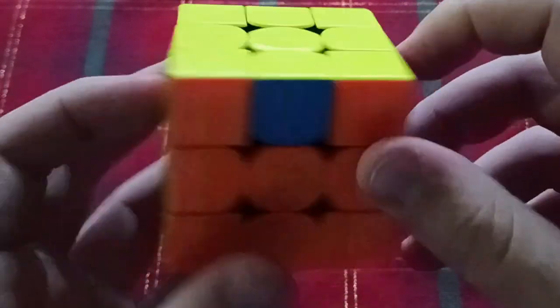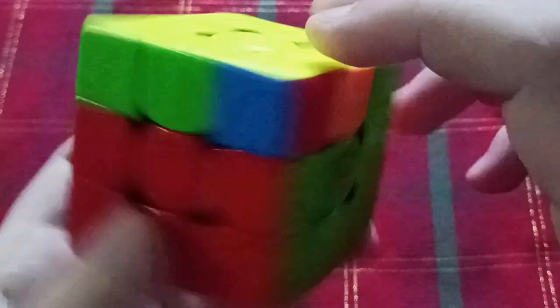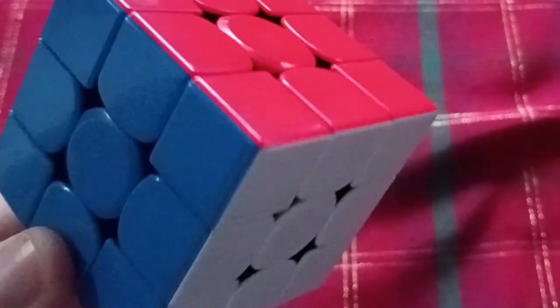And then the other 20 algorithms are for every permutation on the last layer. So you can just do that, and it's solved in four steps.